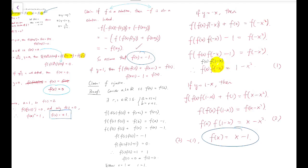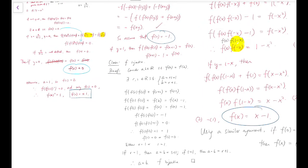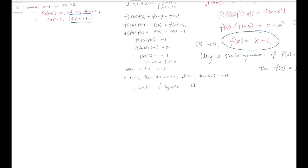Similarly, using a similar argument, if f(0) = 1, then f(x) = 1 − x. We have found three solutions and have considered all cases, so it remains to verify all three are valid.